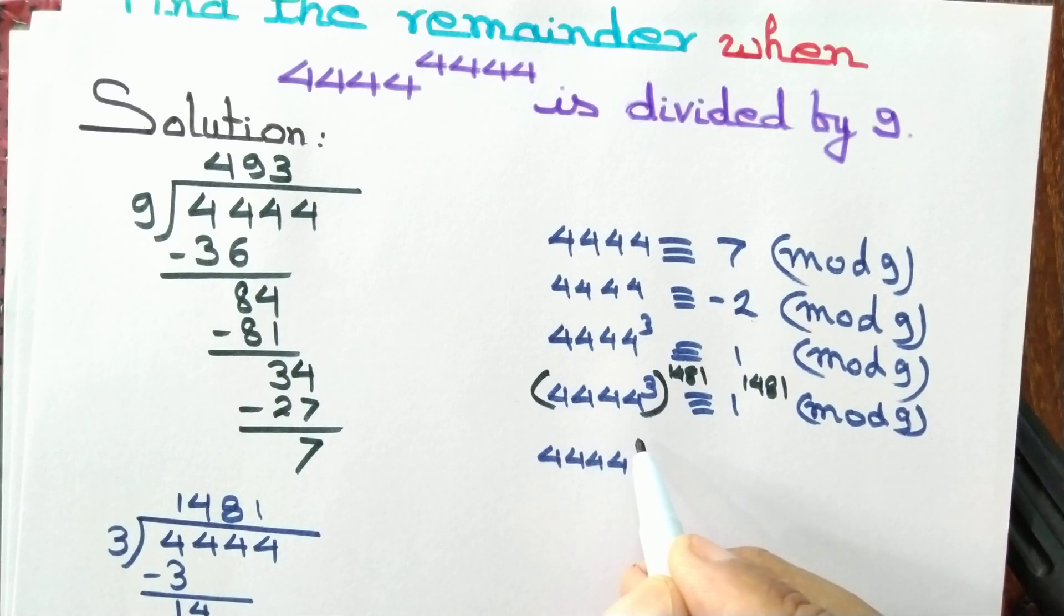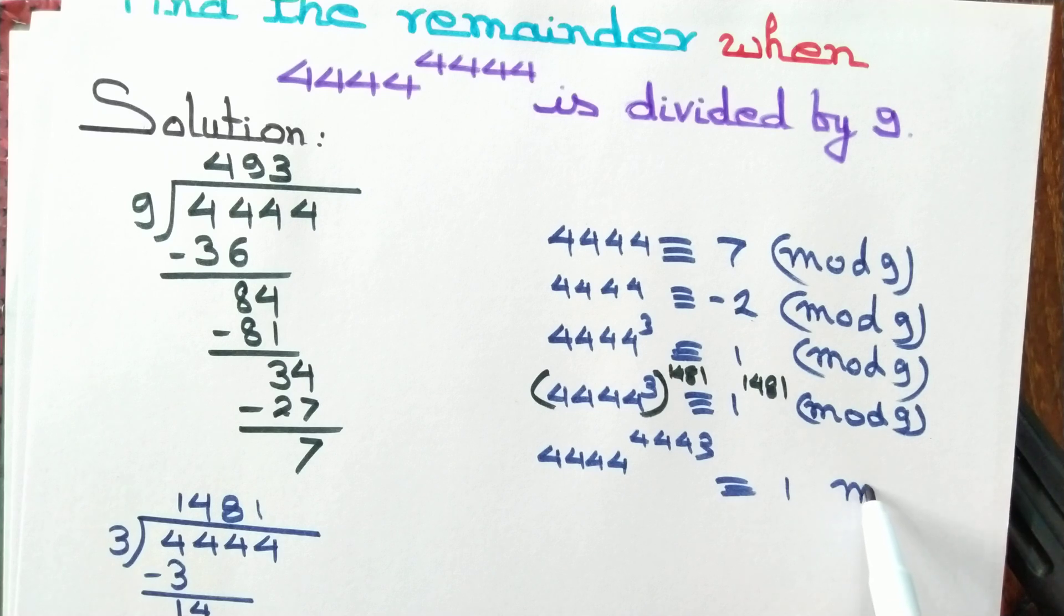If we multiply it out, we'll get 4443 because the remainder is 1. So we just need one more power, which is congruent to 1 mod 9.